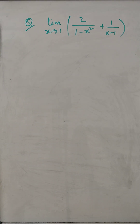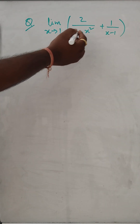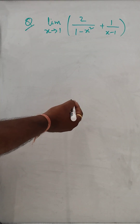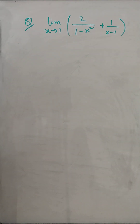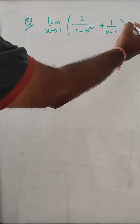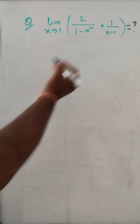Hello, let us solve this problem: limit x tends to 1 of 2 divided by (1 minus x squared) plus 1 divided by (x minus 1). We have to find the value of this.